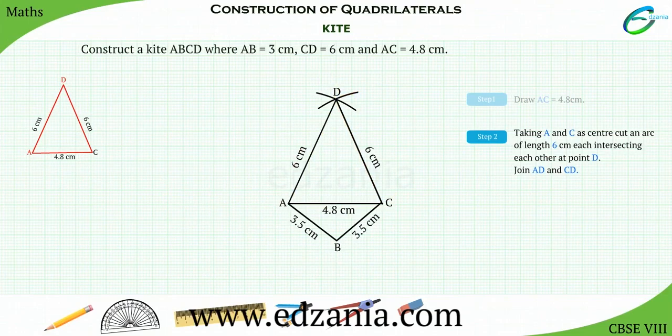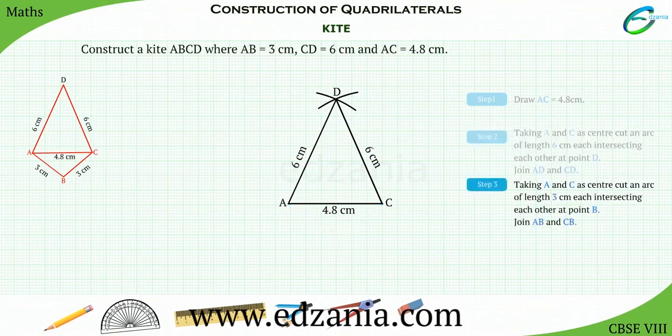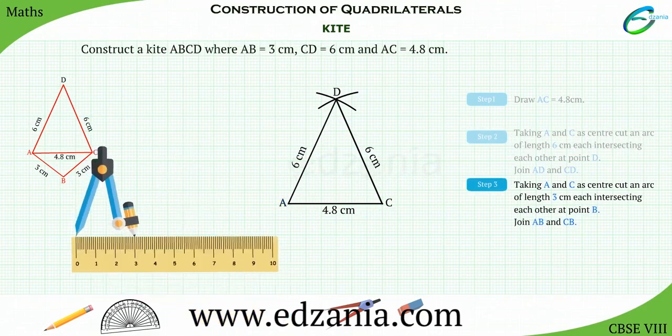Now, the other two sides remaining to construct are AB and side BC. Step 3. Place the compass pointer at point A and cut an arc of length 3 cm.